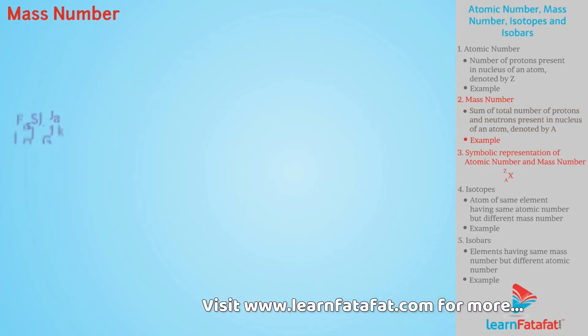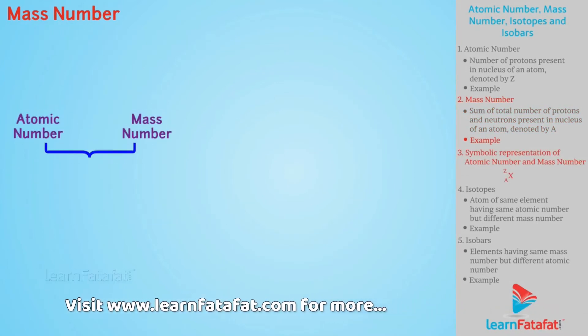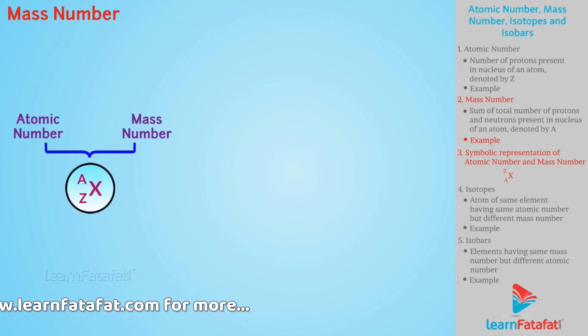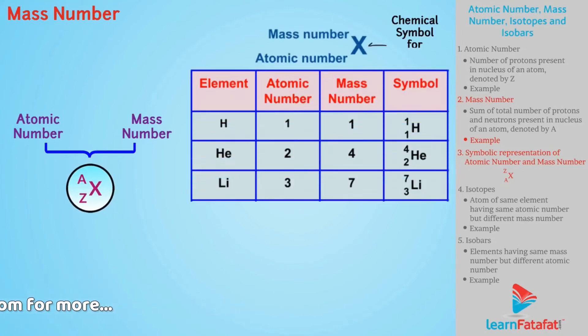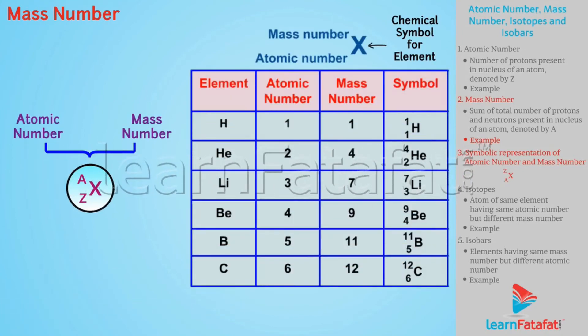For an atom, atomic number and mass number is denoted symbolically as XZA. Following are few elements with their mass number and symbols.